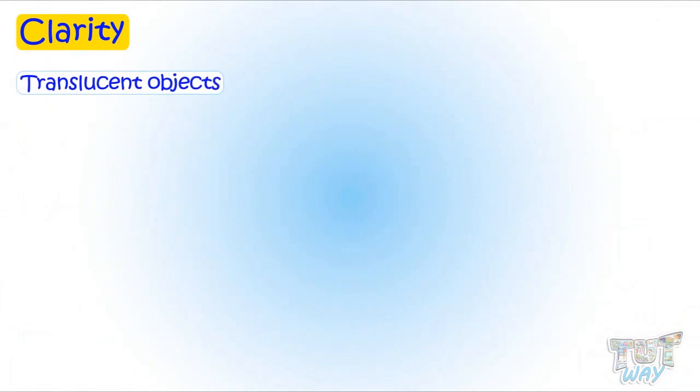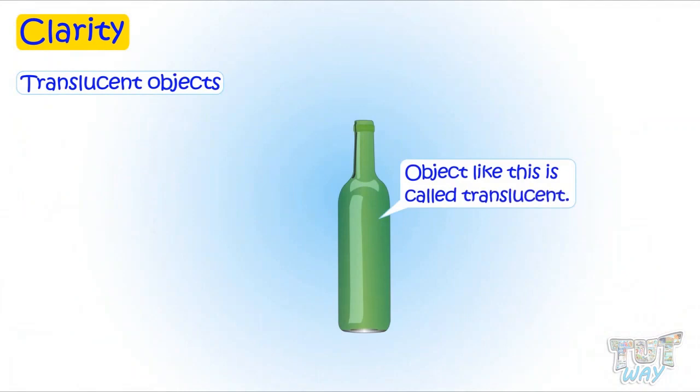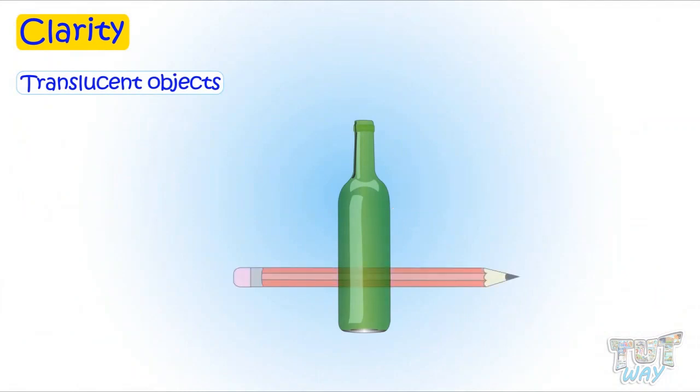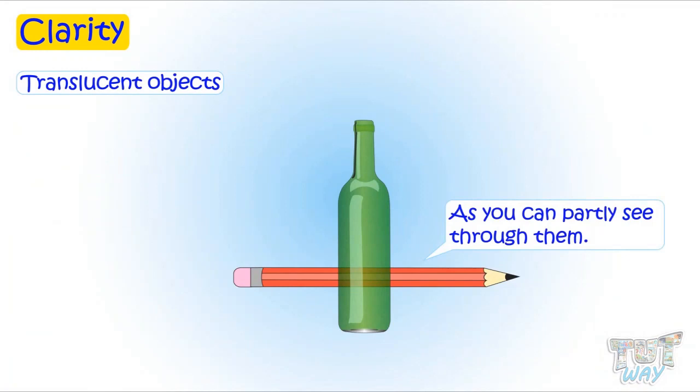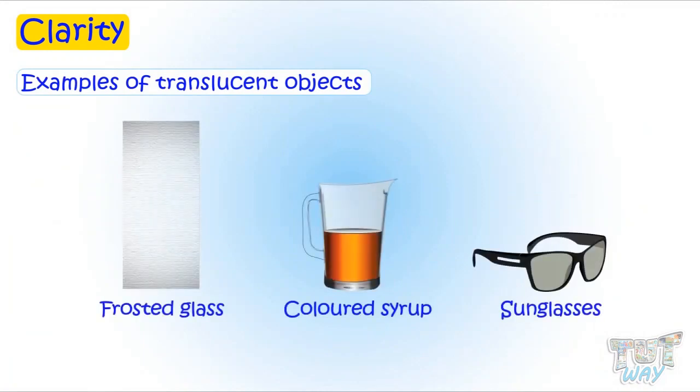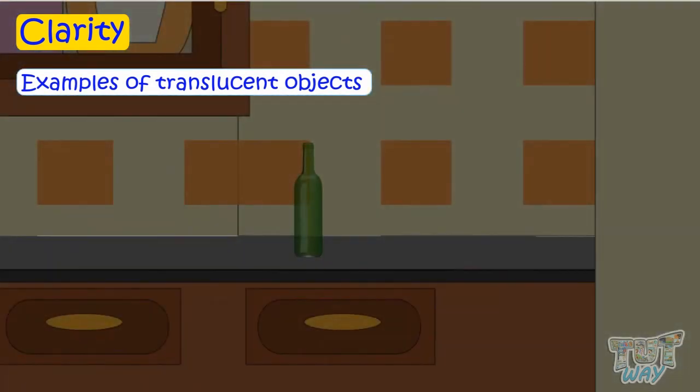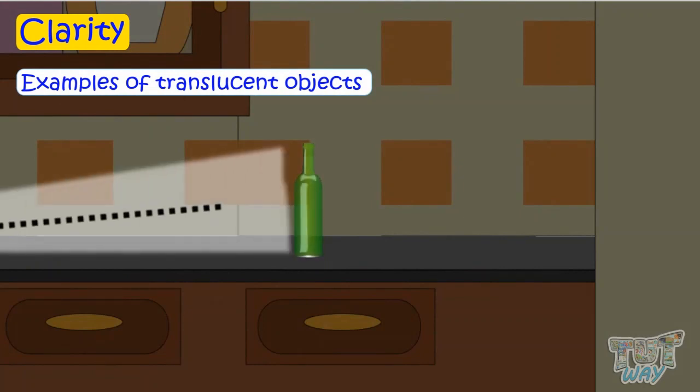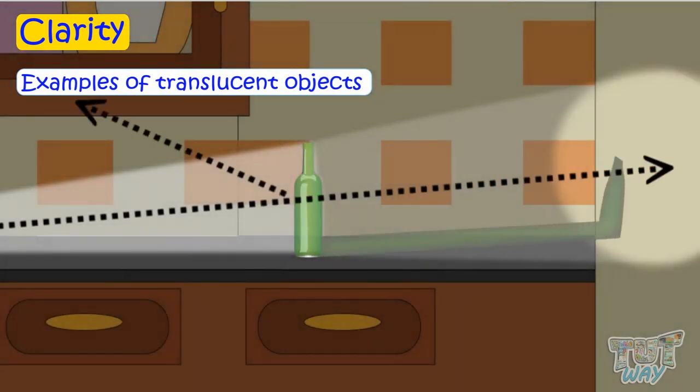Translucent objects. This object is not transparent, but translucent, as you can partly see through them, not clearly. Materials like frosted glass and some plastics are called translucent. When light strikes translucent materials, only some of the light passes through them. Therefore, we cannot see clearly through them.